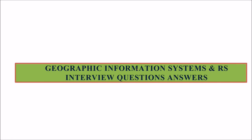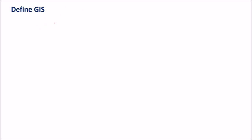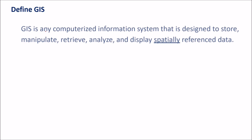Let us take some geographic information system GIS and related questions and answers — these are descriptive ones. First, define GIS. GIS is any computerized information system that is designed to store, manipulate, retrieve, analyze and display spatially referenced data.